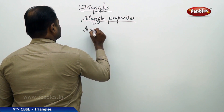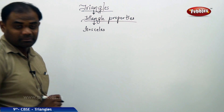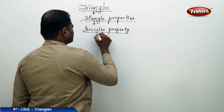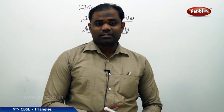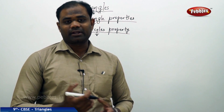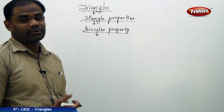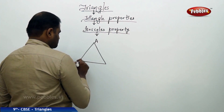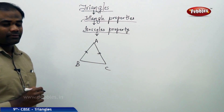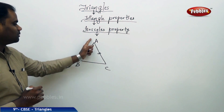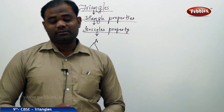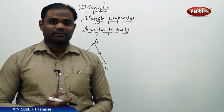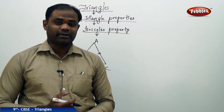The first property is the isosceles property in mathematics. What is an isosceles property? The word isosceles means that any two sides of a triangle are equal, then the triangle is called an isosceles triangle. So a triangle is isosceles if two sides are equal — that is, triangle ABC is isosceles if AB equals AC. Two sides equal implies the triangle is isosceles.